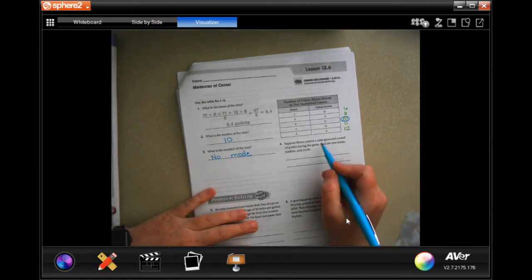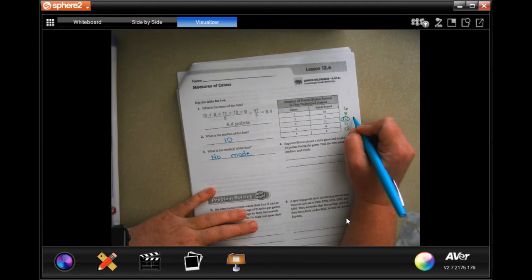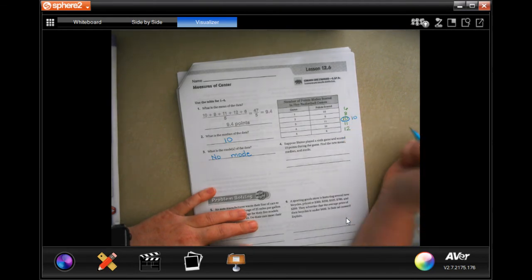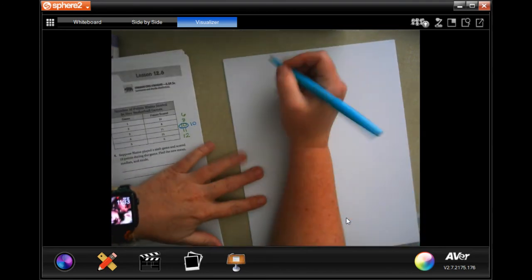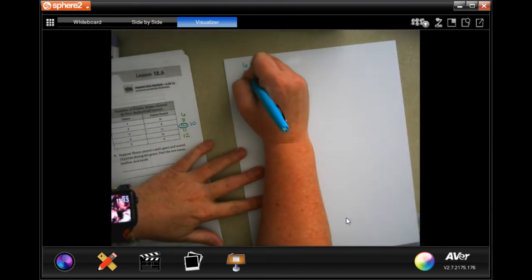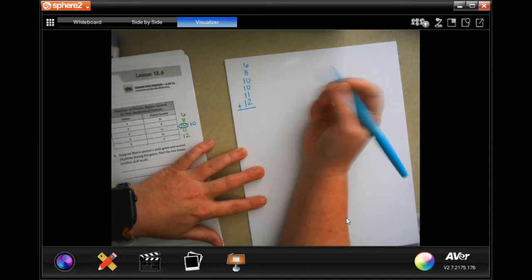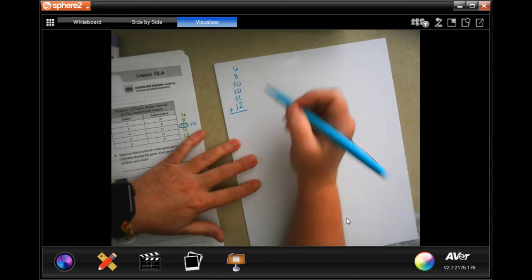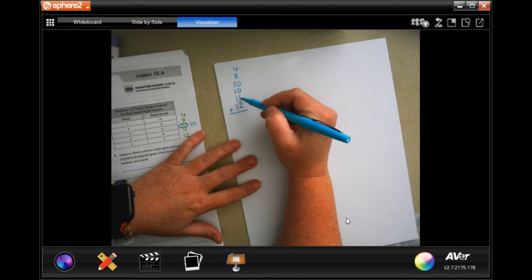Suppose Blaine played a 6th game and scored 10 points during the game. Find the new mean, median, and mode. Well, that would add us another 10 points. So now let's find the mean first. So 6, 8, 10, 10, 11, and 12. I probably should align those up the other way, but that's okay.